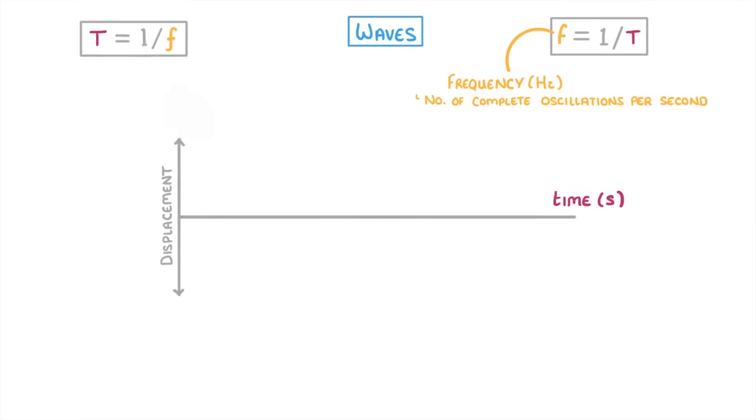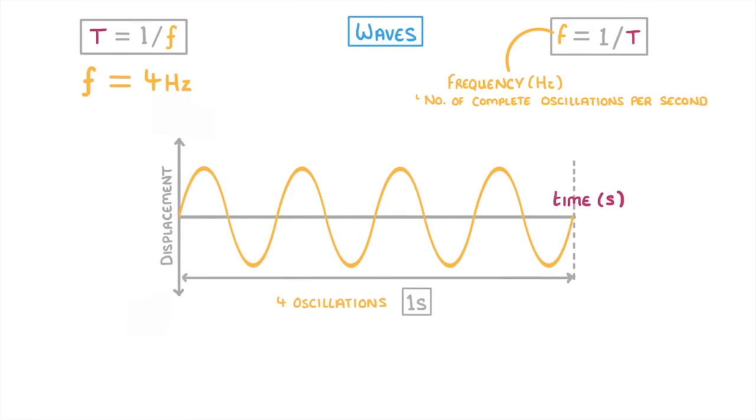We can also use the equation the other way around. So time period equals 1 over frequency. So if we were told that the frequency of a wave was 4 hertz, which means 4 oscillations per second, then to find the time period, we just do 1 divided by 4, which tells us that each oscillation must be 0.25 seconds.